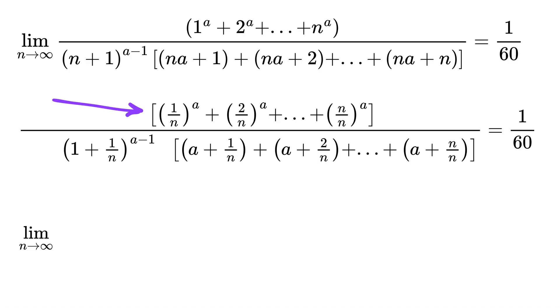Now we can rewrite this sum in the numerator as summation of (k over n) whole raised to a, where k goes from 1 to n, divided by: now write this part of the denominator as it is. Here also we will apply summation. We get sum of a plus sum (k over n), where k goes from 1 to n.